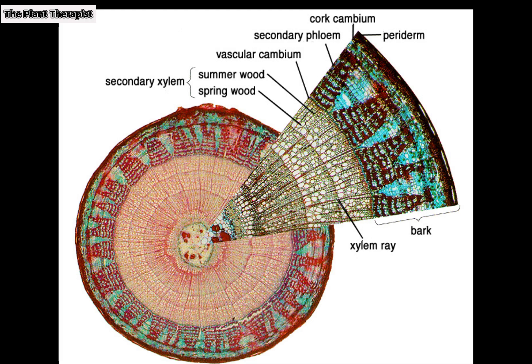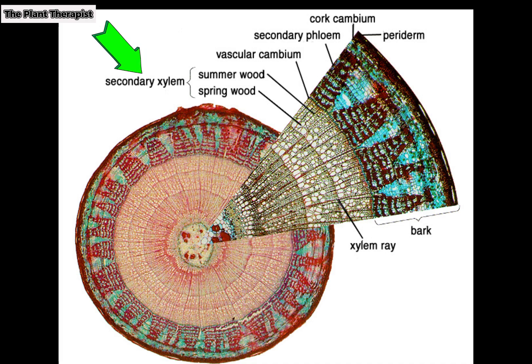In other plants the cambium is not in an uninterrupted cylinder but is instead confined to the bundles, each of which has its own small band of cambium between the xylem and phloem. In woody plants, obvious differences begin to appear as soon as the vascular cambium and the cork cambium develop. The most conspicuous difference involves the secondary xylem, or wood. The wood of most trees is produced seasonally — when the vascular cambium of a typical broadleaf tree first becomes active, it usually produces relatively large vessel elements of secondary xylem, referred to as spring wood.